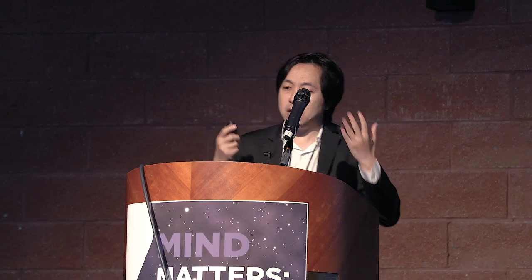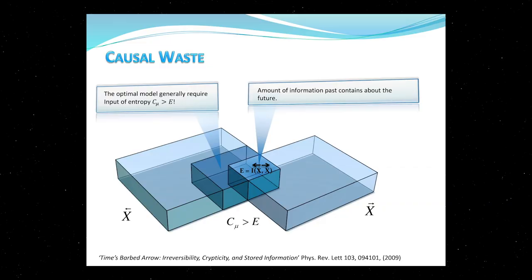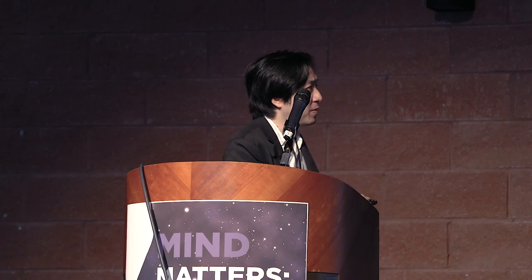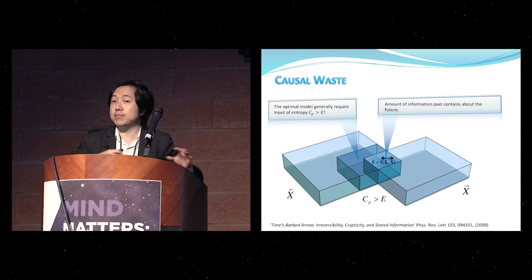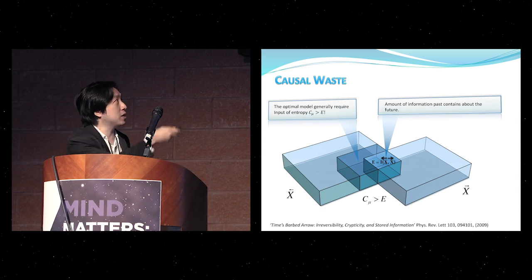What we were interested in is: is this classical measure fundamental, or can we do something better quantum mechanically? Our first guide from the classical side is that there is room for improvement. The information here is a mutual information between the past and the future — the amount of information the past contains about the future. There's no prior reason why we need to store more than this to generate the right future predictions. But it turns out the optimal machines — epsilon machines — generally need memory, the statistical complexity, that is strictly greater than the mutual information between past and future. This gap I call the causal waste: information irretrievably wasted during prediction.